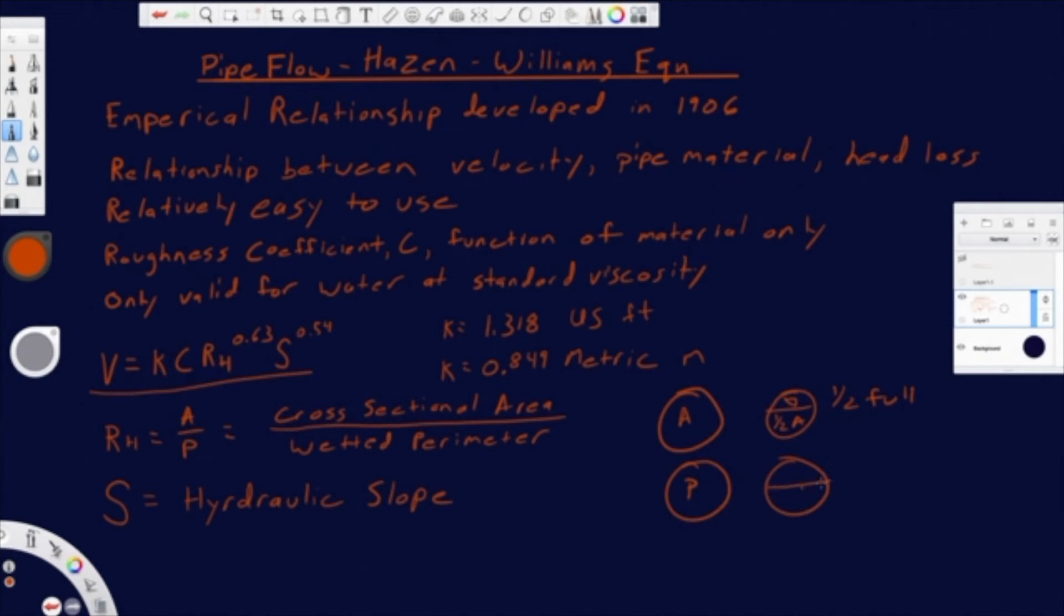In the case of a pipe that's half full, you're going to have just one half of this perimeter. And it's going to be this perimeter that is being wetted by the fluid. You're not going to be counting any part of this perimeter that is exposed to atmosphere, because it's not contacting the material. There's no frictional loss there, which is really what this is accounting for.